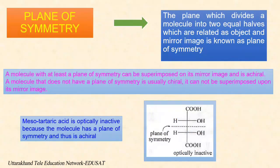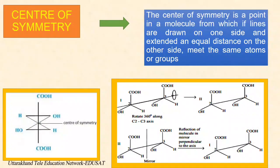Plane of symmetry: the plane which divides a molecule into two equal halves related as object and mirror image is known as the plane of symmetry. Meso tartaric acid is optically inactive because the molecule has a plane of symmetry and thus is achiral. The center of symmetry: a molecule has an improper alternating axis of symmetry, also called a rotation-reflection axis. It is rotated 360°/n about this axis and then reflected across a plane perpendicular to this axis, and an arrangement identical to the original is obtained.